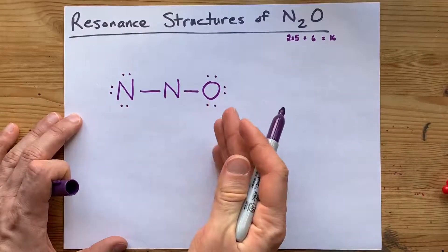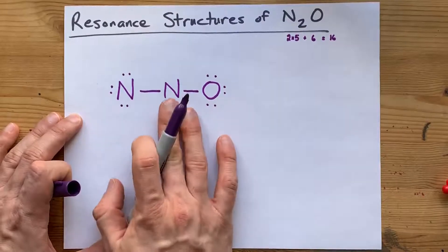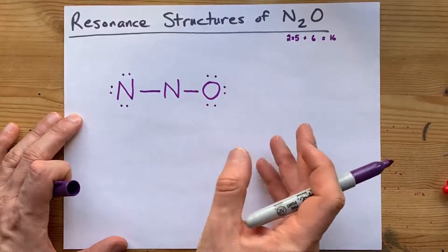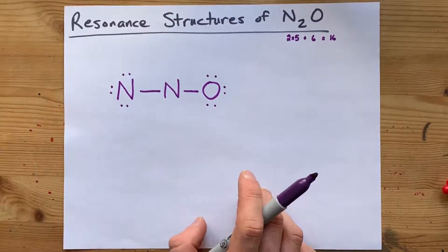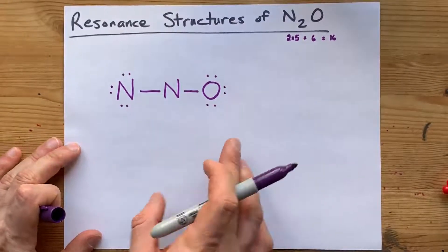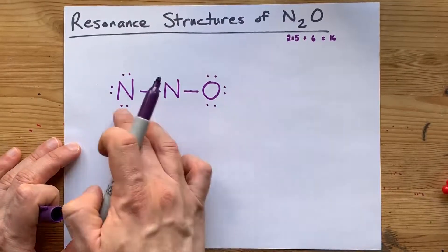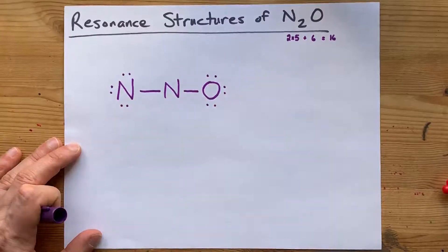Now, this is not a valid Lewis structure, because this nitrogen doesn't have a full 8 electrons in its outer shell. We need to move electrons from outer atoms to share with that nitrogen.